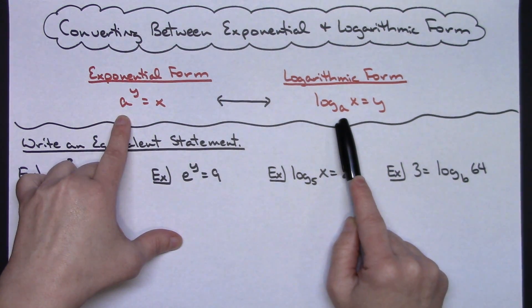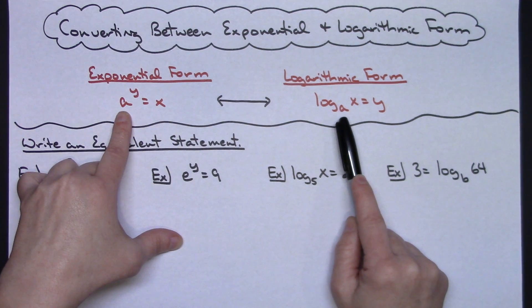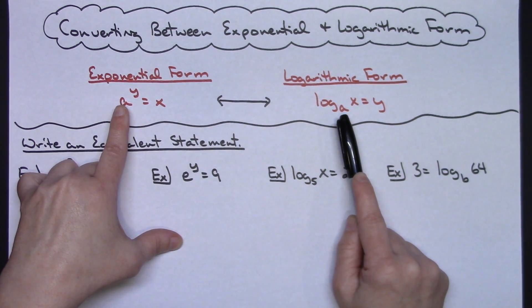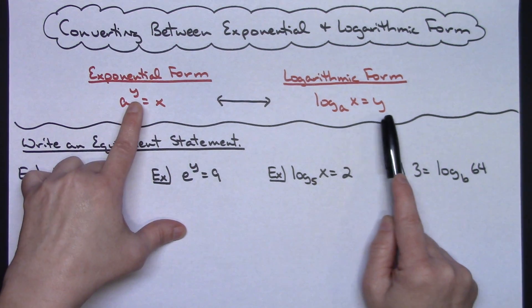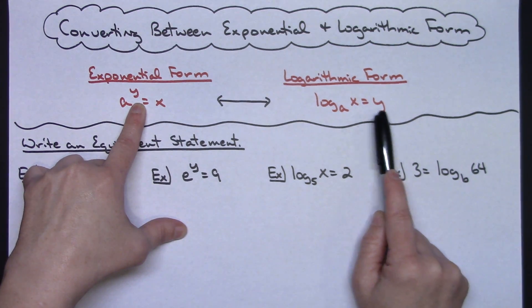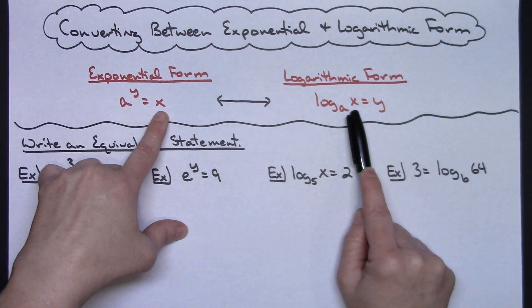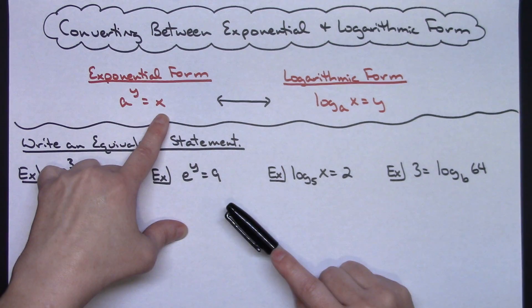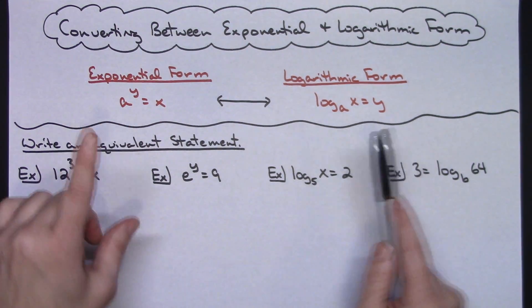The one thing that you can notice going back and forth between these two is that the base in the exponential form is the base on the logarithm. And then it's your base raised to the exponent is what you set the logarithmic form equal to. And then you're taking the log of the answer of that exponential form. So these are your two forms going back and forth.